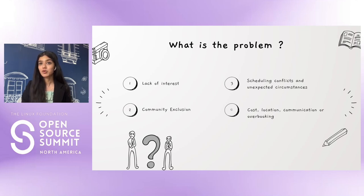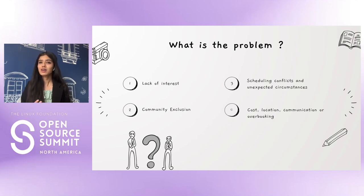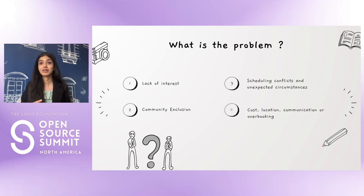Second is community exclusion — there could be a lack of diversity and inclusivity in the community itself. Third, scheduling conflicts and unexpected circumstances: something we can't always control, but should be taken into consideration, such as conflicting Fridays, last-minute obligations, and transportation issues.